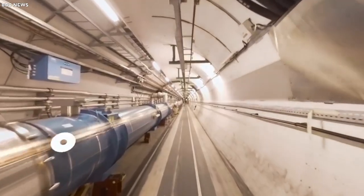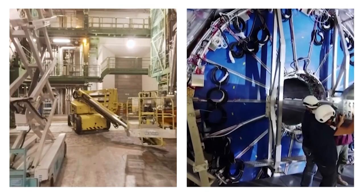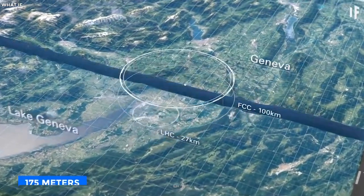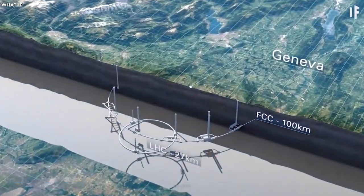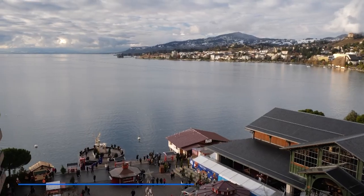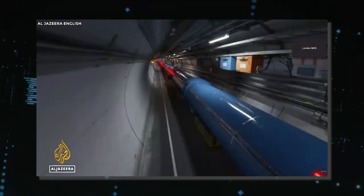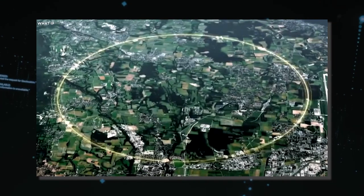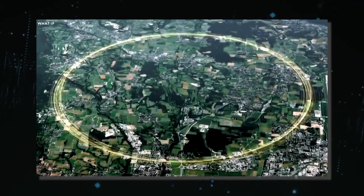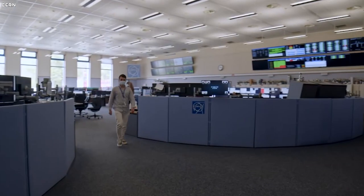Within this subterranean voyage, the tunnel's depth evolves, oscillating between 175 meters beneath the Jura Mountains and a shallower 50 meters near the serene Lake Geneva. This fluctuation in depth is a testament to the harmonious integration of geological realities and scientific ambitions.